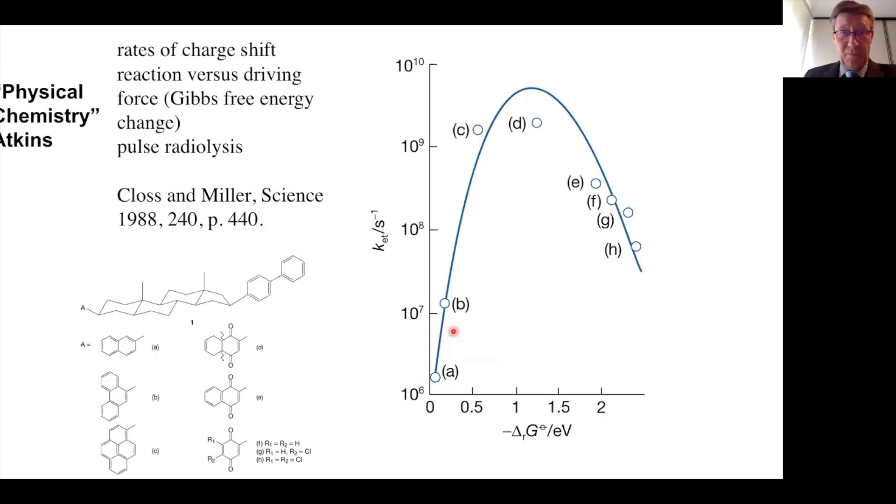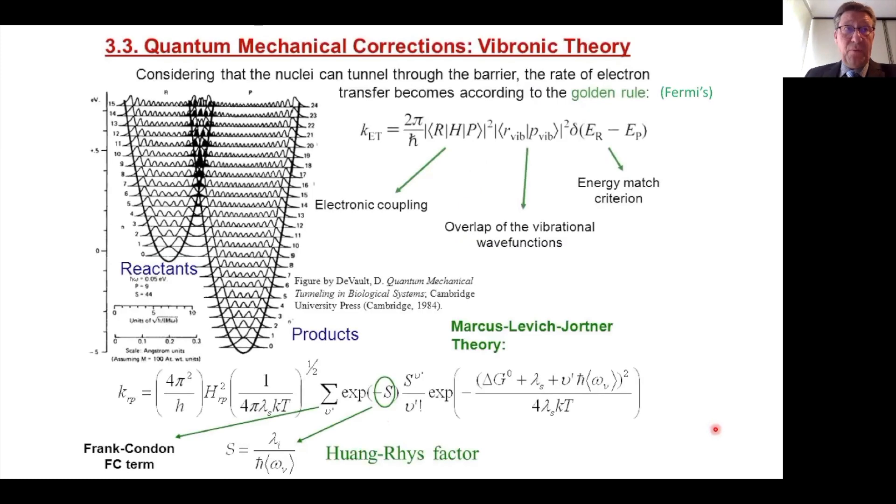As you may know, the classical Marcus expression has made it into the textbook, like physical chemistry of Atkins, and there it shows the classical way, this classical curve, the bell-shaped Marcus curve, where the rate versus the driving force is given. We have seen before in previous lectures that the Born-Oppenheimer approximation, which tells us that we can separate the electronic part and the nuclear part, is not always valid in photochemistry, like for instance in the forbidden transitions of pyrene.